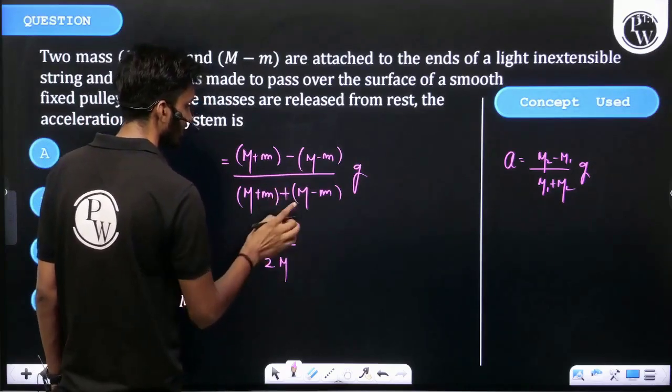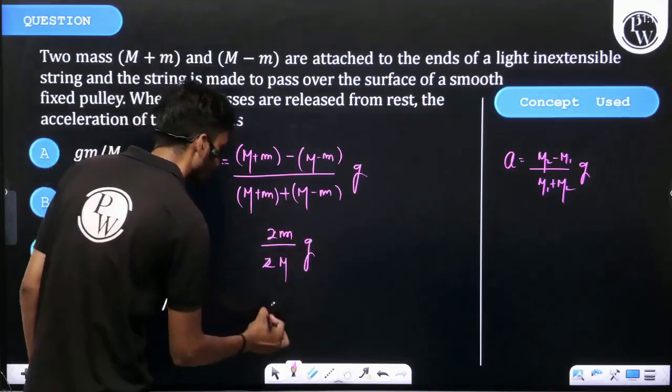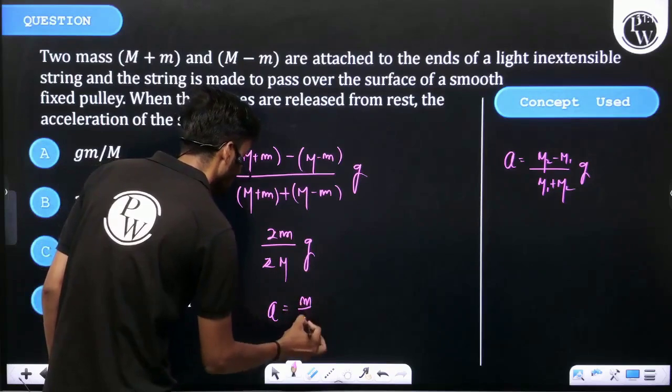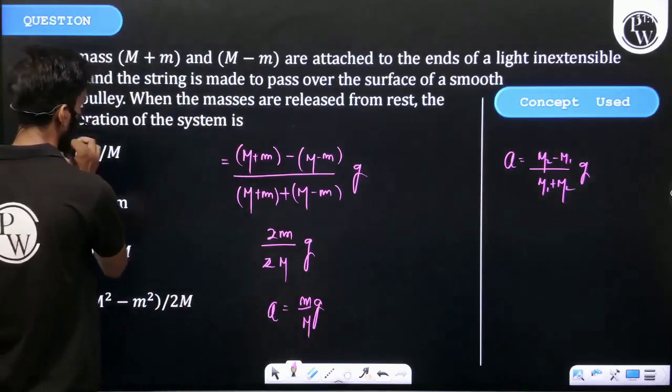The 2 cancels out, then acceleration is equal to small m upon capital M into g. So option number A is correct.